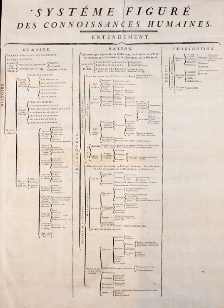The tree was a taxonomy of human knowledge, inspired by Francis Bacon's The Advancement of Learning. The three main branches of knowledge in the tree are: memory/history, reason/philosophy, and imagination/poetry.